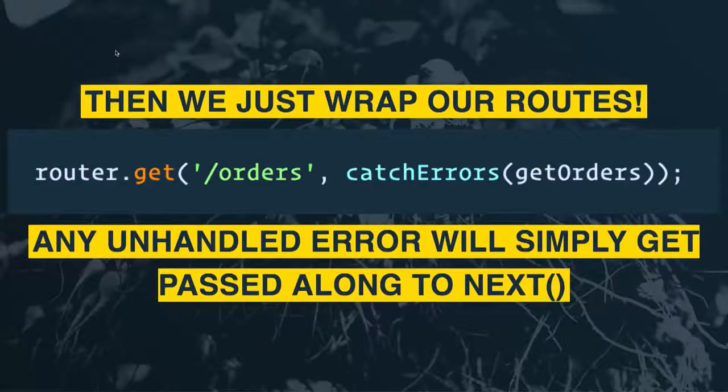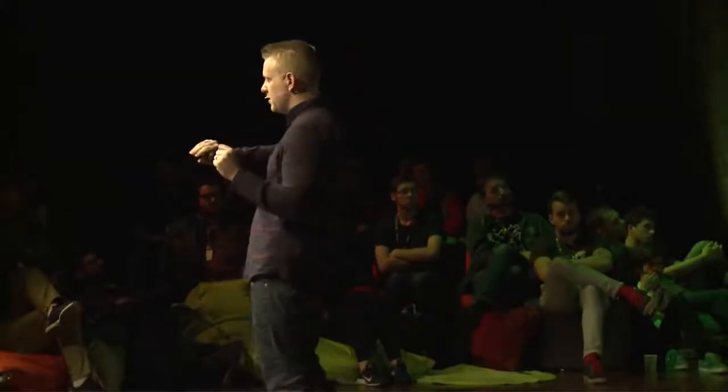If you're a hot shot you can do it as an arrow function. This is how we implement it: we've got our catchErrors function, then we write all of our routes or controller functions without any error handling, and then we take our controller getOrders and pass it to catchErrors. That's really nice because you can write all of your routes without having to worry about handling the error, and then just wrap each of your routes in this catchErrors function.